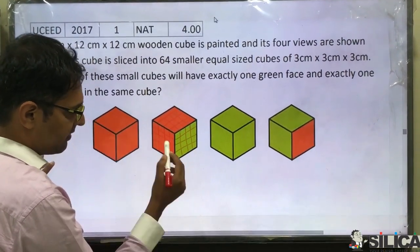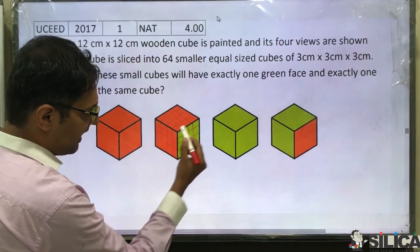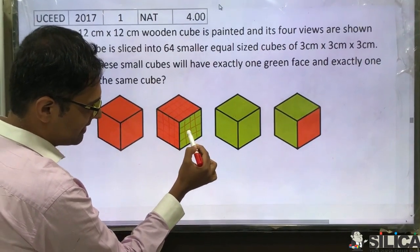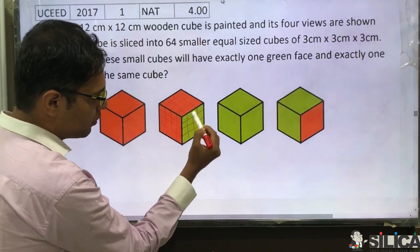So what can we say? Along the edge which has one side orange and one side green, there will be two such cubes.